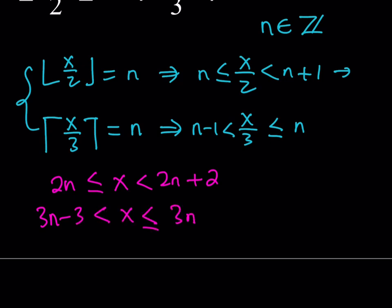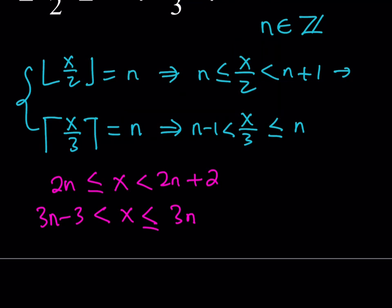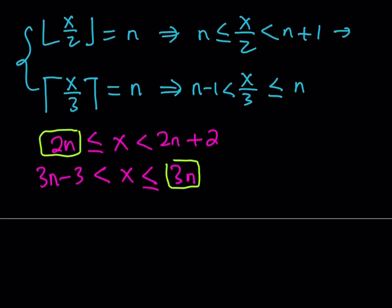We have two double inequalities and n is always an integer. The strategy is to take the lower boundary from one inequality and the upper boundary from the other and compare them — x must satisfy both, so the upper limit must exceed the lower boundary. This means 2n must be less than 3n, which implies n is greater than 0. So n has to be positive, which also means x must be positive.